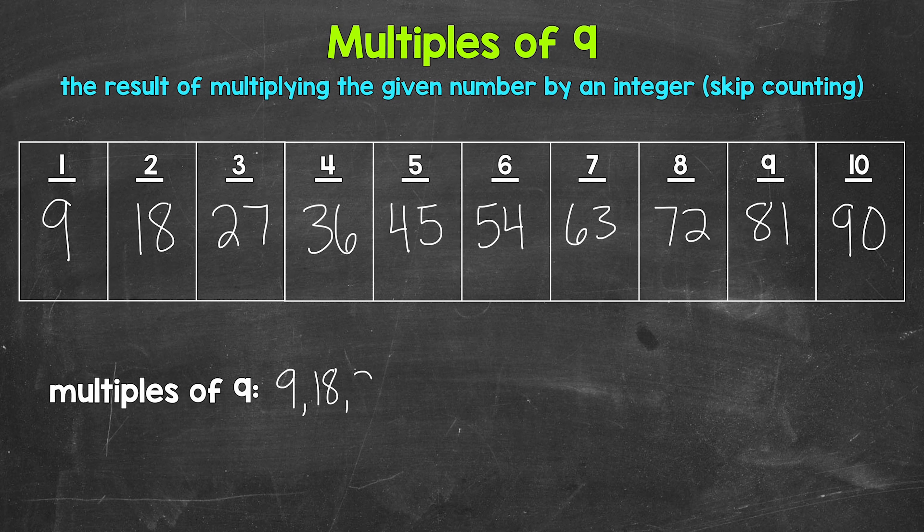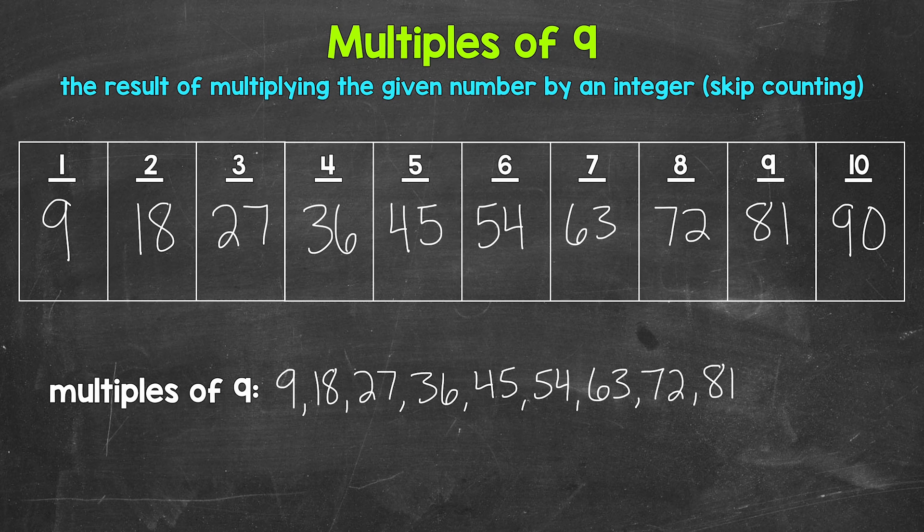So we have 9, 18, 27, 36, 45, 54, 63, 72, 81, 90, and these continue on. So there you have it. There are the first 10 multiples of 9.